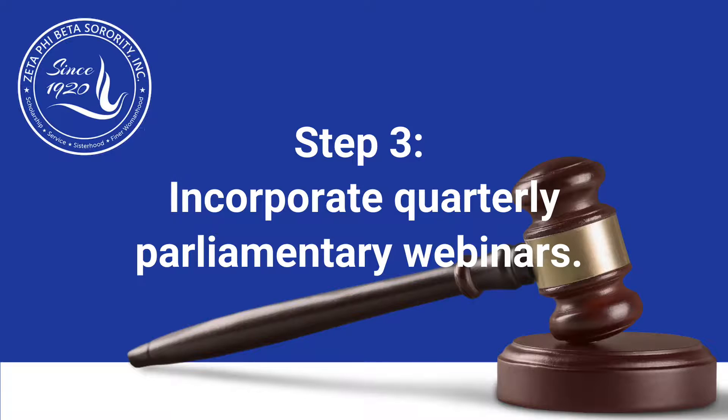Step three: host quarterly webinars to address parliamentary topics. Robert's Rules is a living guide that adapts as the dynamics of our organizations evolve. These webinars will provide additional opportunities to build upon our learnings and act quickly to ensure that the business of our organization continues.